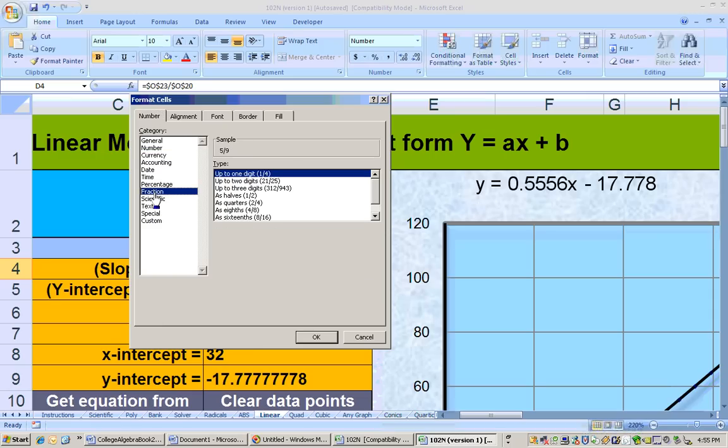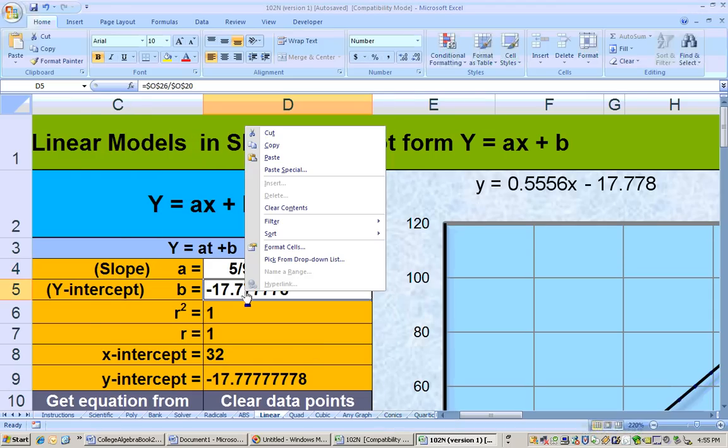and let's see, fraction here, and we could go clear up to three digits if we needed it, but it's 5 ninths,